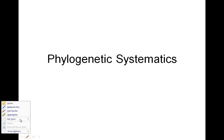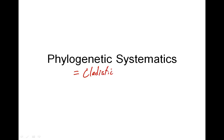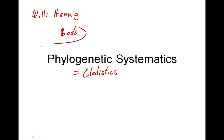We're going to continue our study of the schools of systematics by turning to our last of the three schools: phylogenetic systematics. This school is sometimes given another name — in fact almost always given another name — and that is cladistics. So the first thing we're going to do is try to understand these two different names, phylogenetic systematics and cladistics.